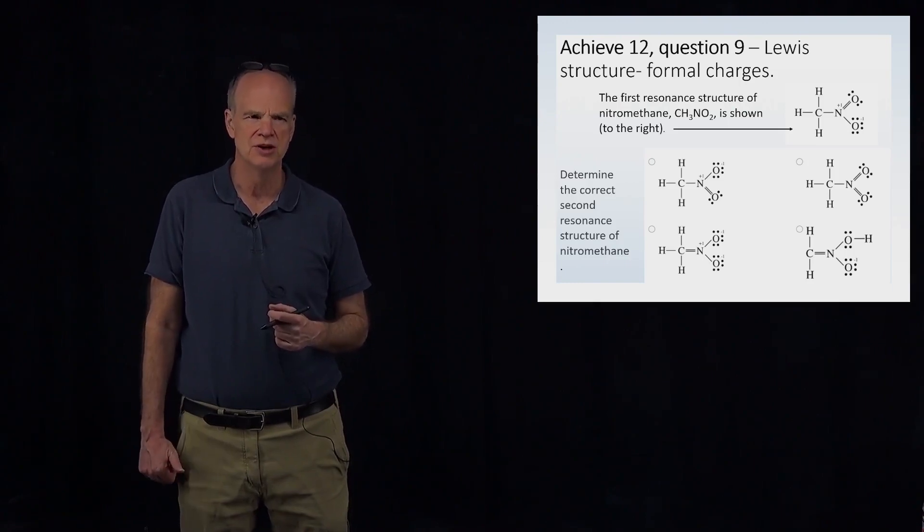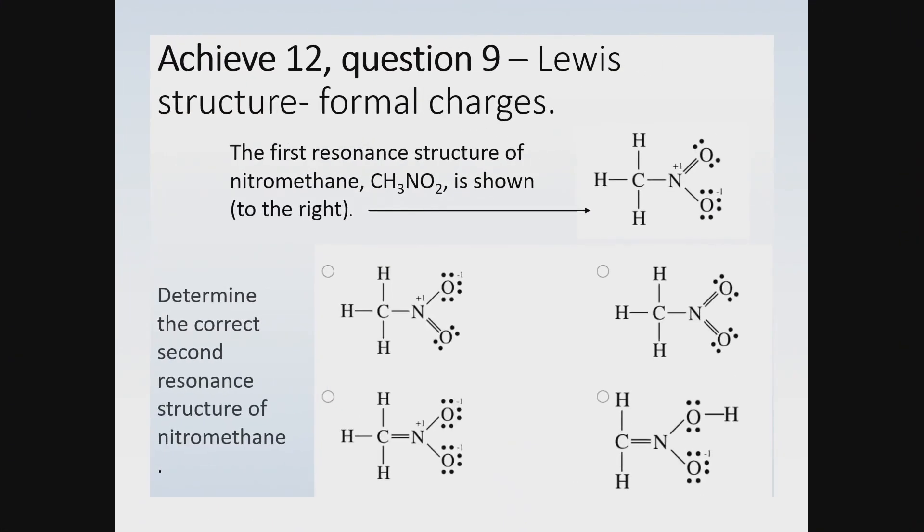Hey everybody, welcome back to chemistry. Okay, so in this problem we are given a Lewis structure for this molecule which is called nitromethane, and here's its formula: CH3NO2.